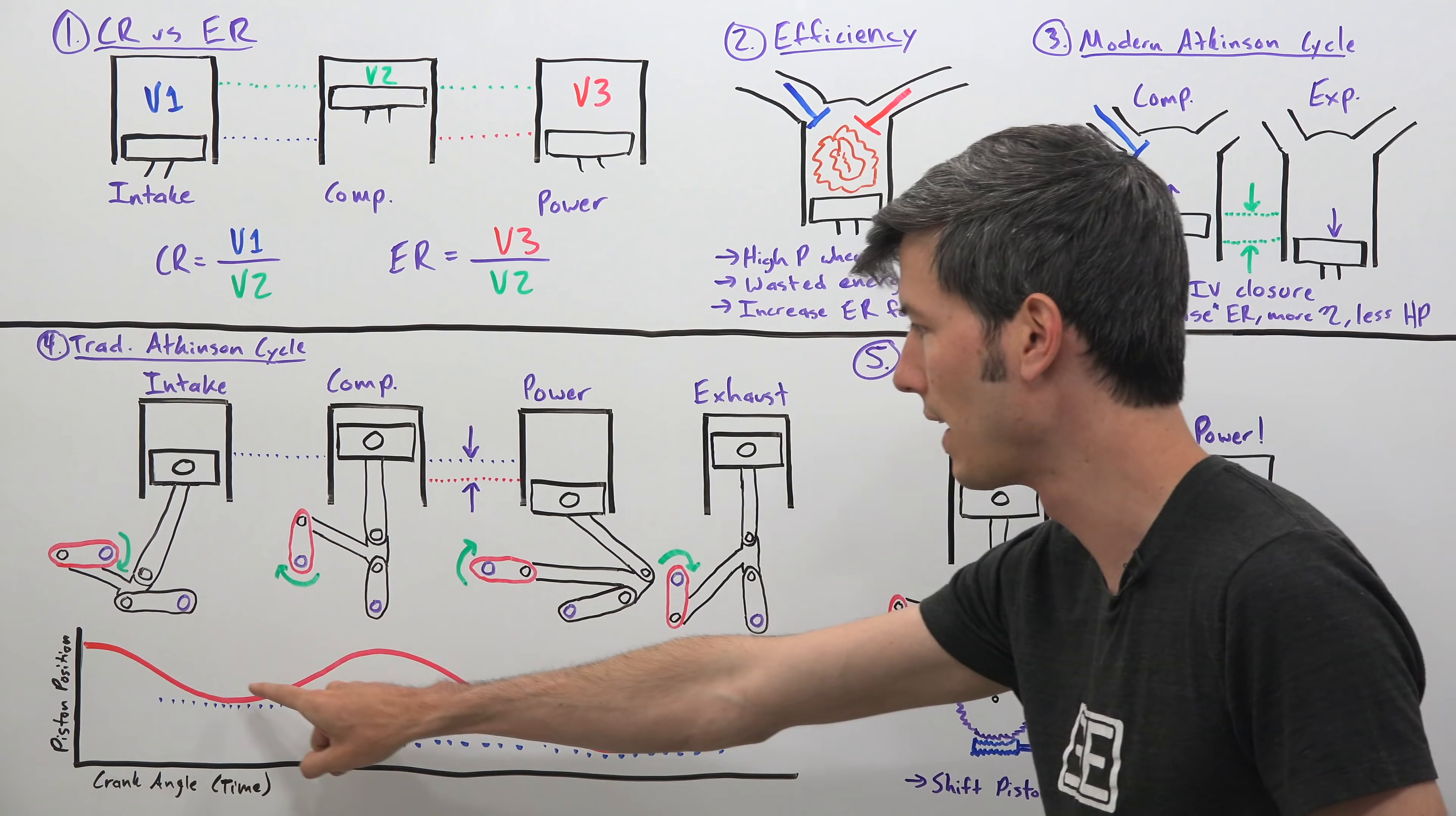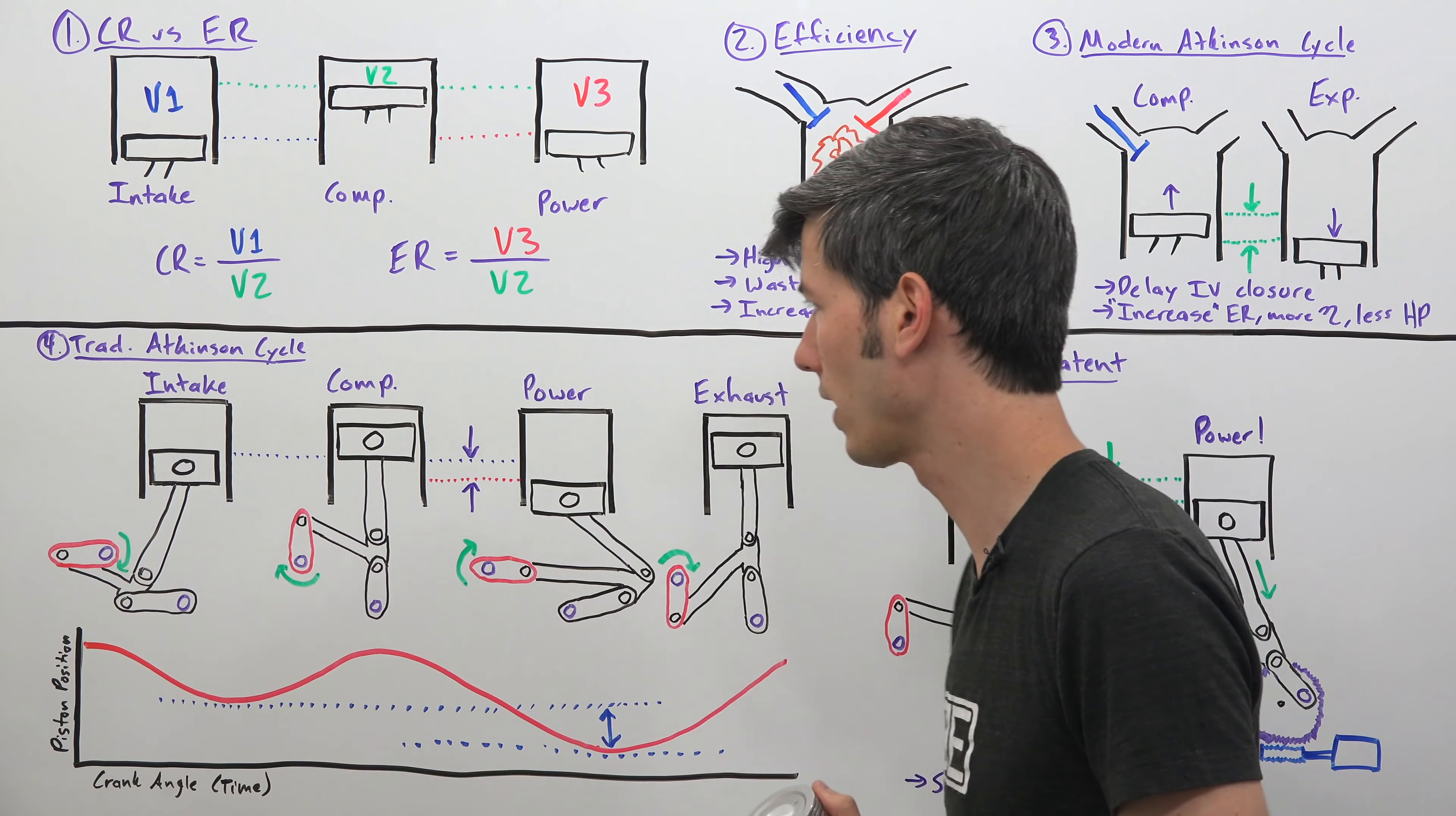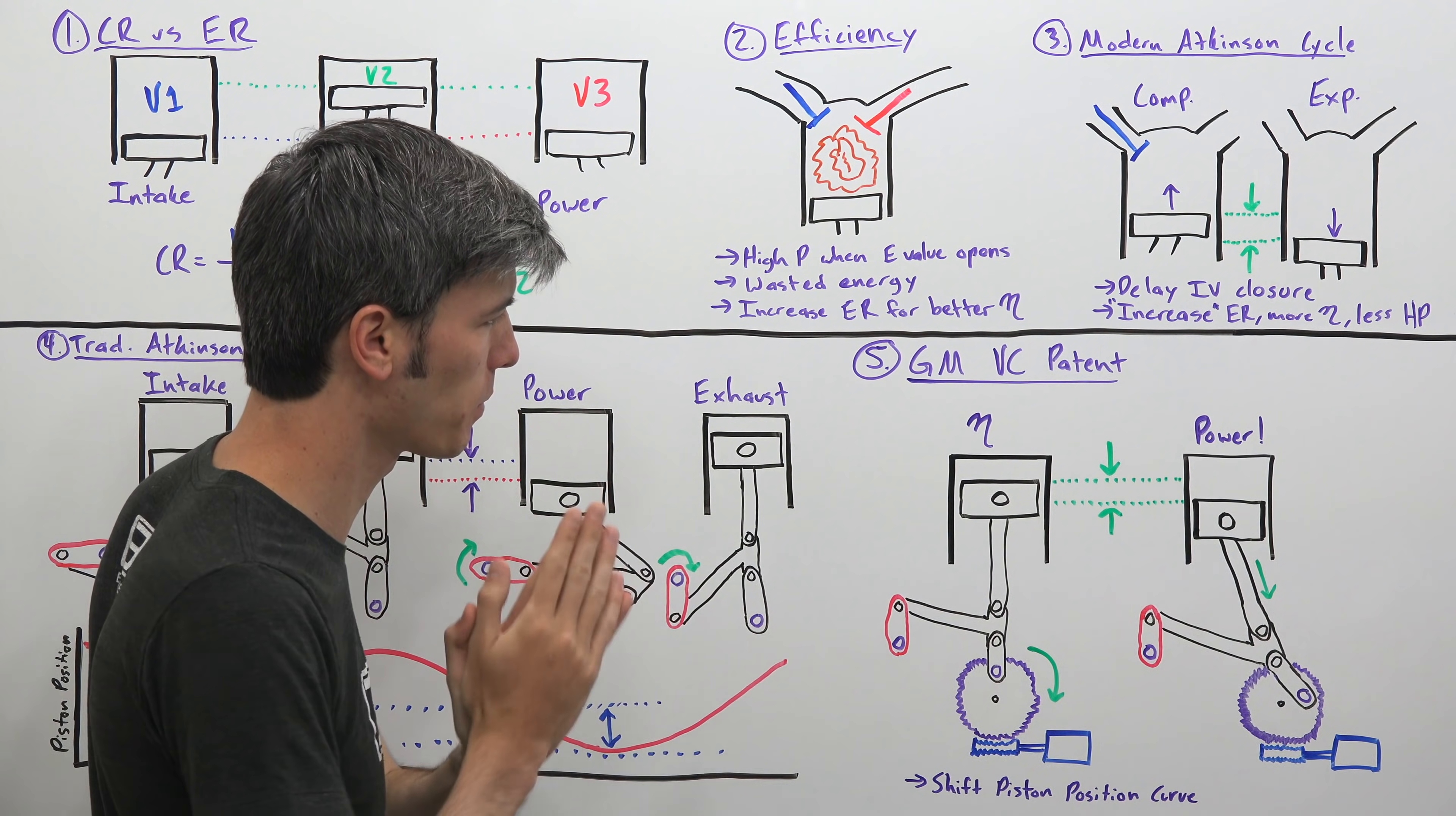And so if you're to trace the position of that piston, you can see it comes down for the intake stroke, back up for the compression stroke, goes further down than it did for the intake stroke, for your expansion stroke, and then back up to the beginning of your intake stroke. And so you have that independent intake stroke distance versus your power stroke distance, which allows for greater efficiency. Okay, so now we can get into the meat of GM's patent.